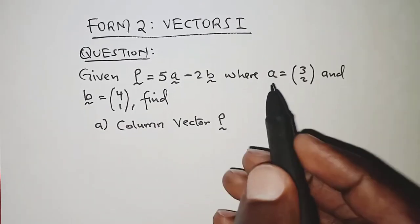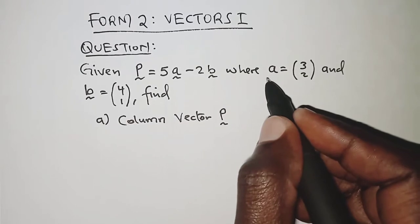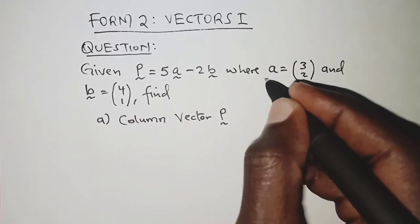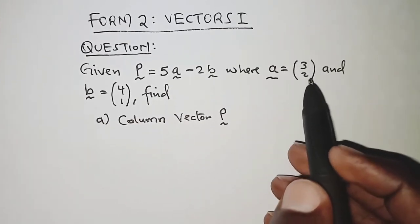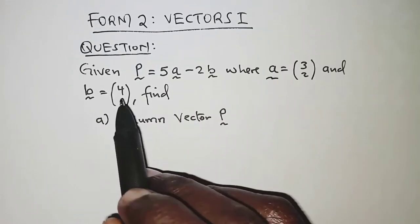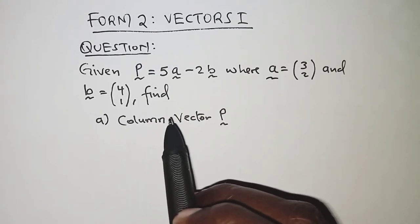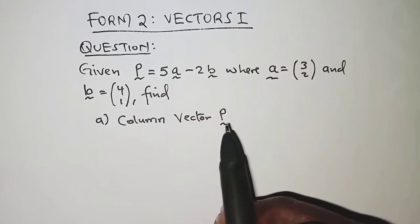And you are given A - remember this is a vector - A is (3, 2), and B is (4, 1). Find the column vector P.